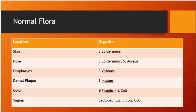Normal flora: skin — Staph epidermidis and aureus; nose — Staph epidermidis and aureus; pharynx — Strep viridans; dental plaque — Strep mutans; colon — E. coli and Bacteroides fragilis; vagina — Lactobacillus, E. coli and Group B Streptococcus.